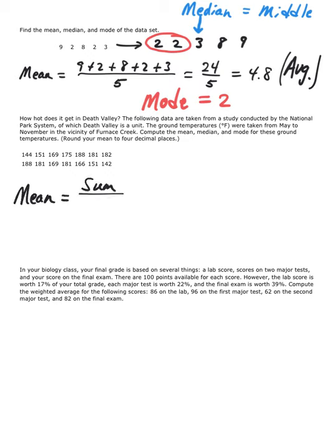It'll be the sum of all these values divided by 2, 4, 6, 8, 10, 12, 14. I'm going to pause the video and get a grand total. I didn't want you to have to suffer through all those button pushes. I've got a total of 2368 for the sum of all 14 temperature readings divided by 14. I have 169.1429. I only round it out because in the parentheses we're asked to round to four decimal places.